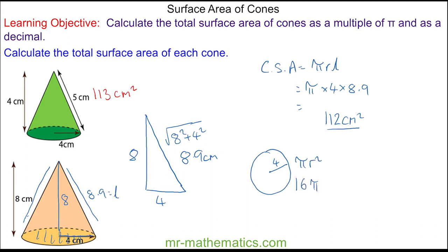So we have the total surface area, which is 112 plus 16 pi. The total surface area is therefore 163 centimeters squared to three significant figures.